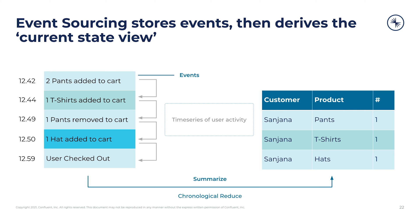The stream of events isn't a great resource for reading the current state from. Say we want to know how many pants are in the shopping cart. That information is spread over multiple events: two add events and one remove event, all created at different times. Event sourced systems solve this problem by reading all the events into the client and performing a computation that derives the current state. In this case, it's a chronological reduce.